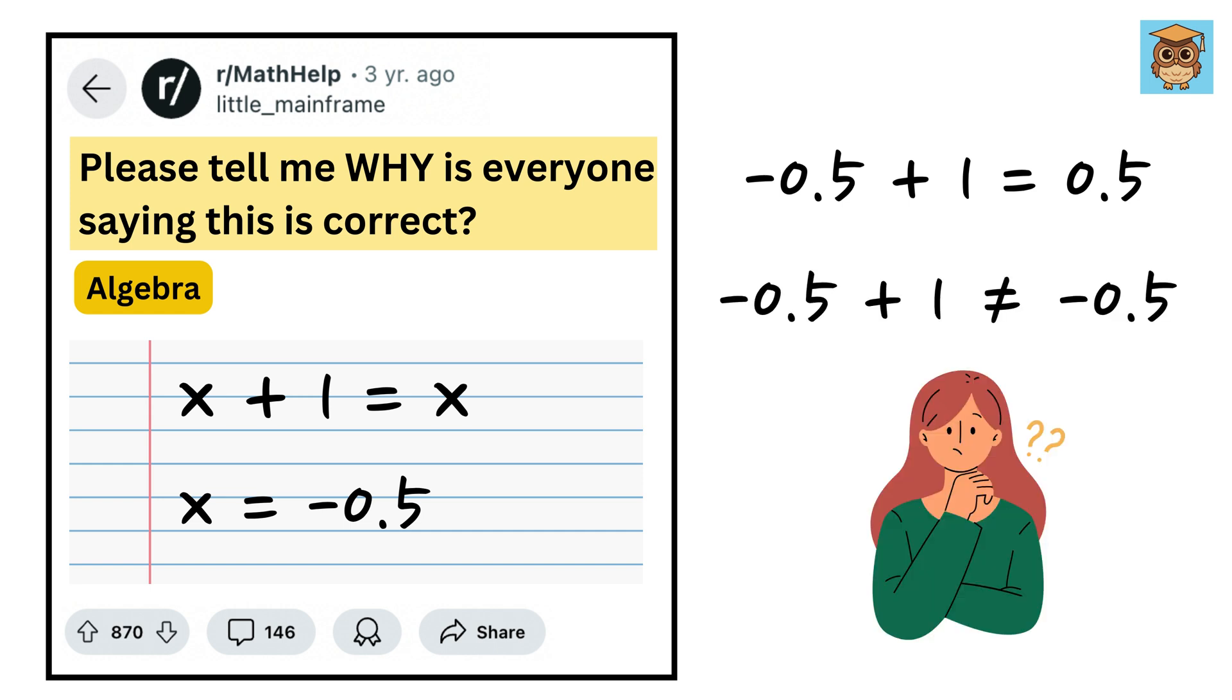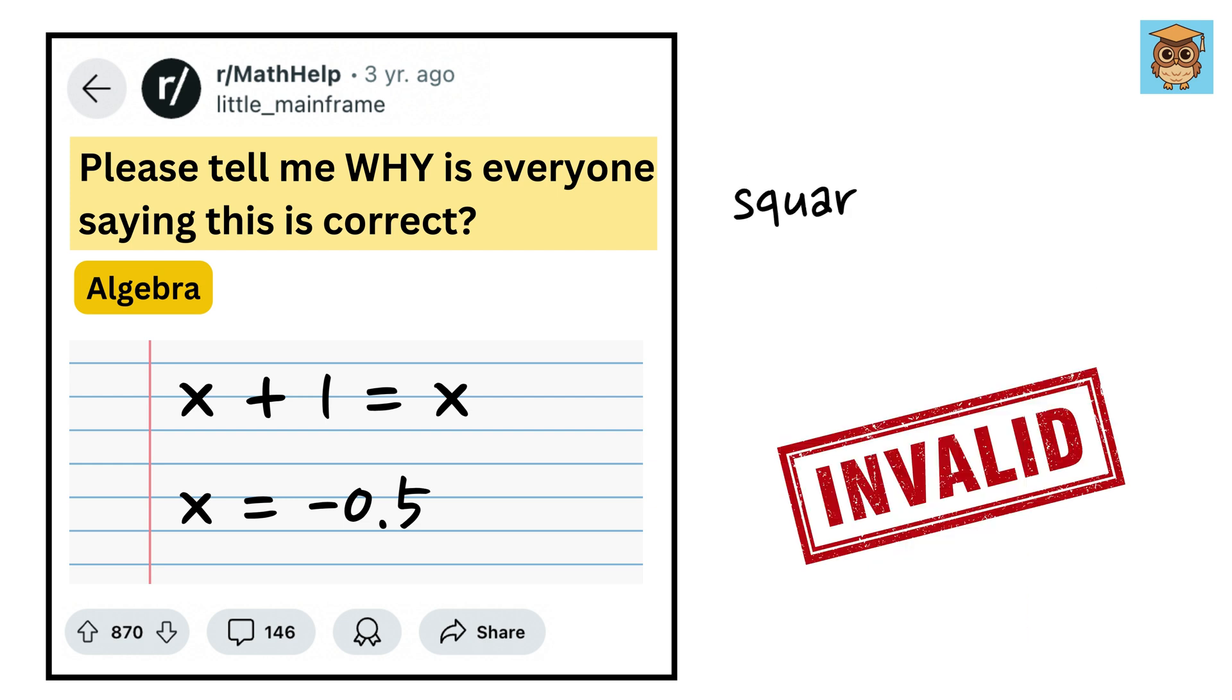Here is the key issue: squaring both sides isn't a valid step when solving the original equation. This is where the real mistake happens. When you square both sides of an equation, you change the nature of the problem.